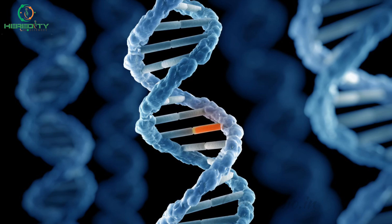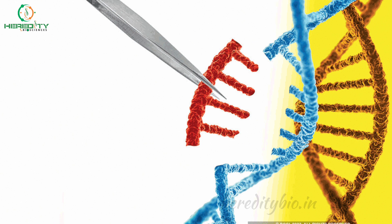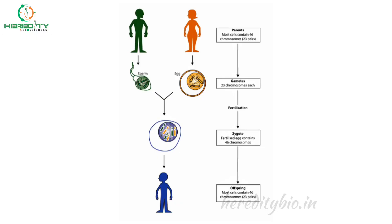A hereditary disease is caused by an alteration in the genetic material transmitted from parents to their children. While there is also a change in the DNA, the key characteristic here is the fact that the disease is transmitted because the alteration is present in all the cells of the organism, including the germline cells. We know that DNA is transmitted from one generation to the next.